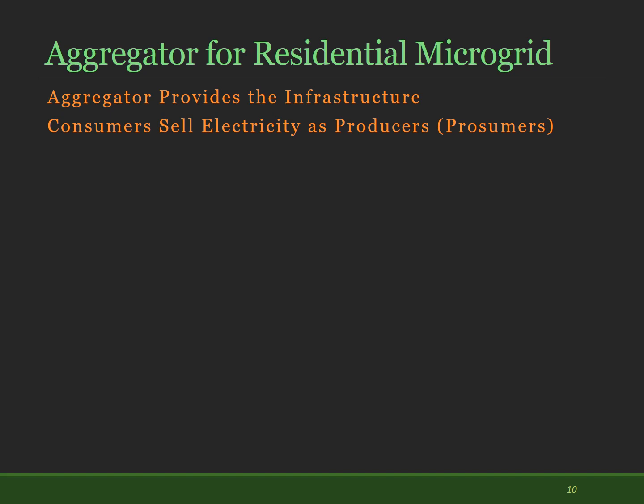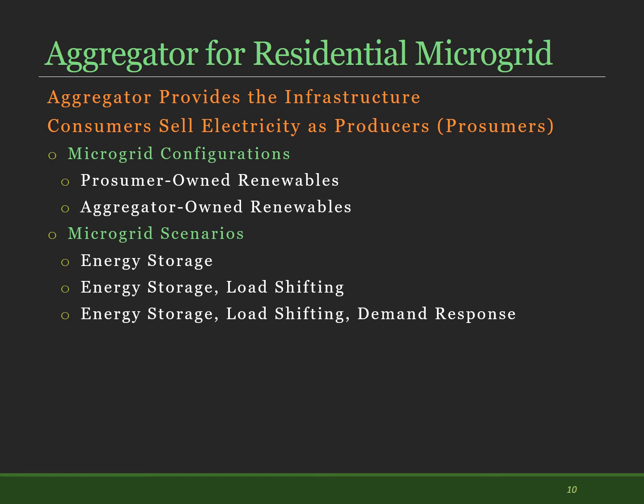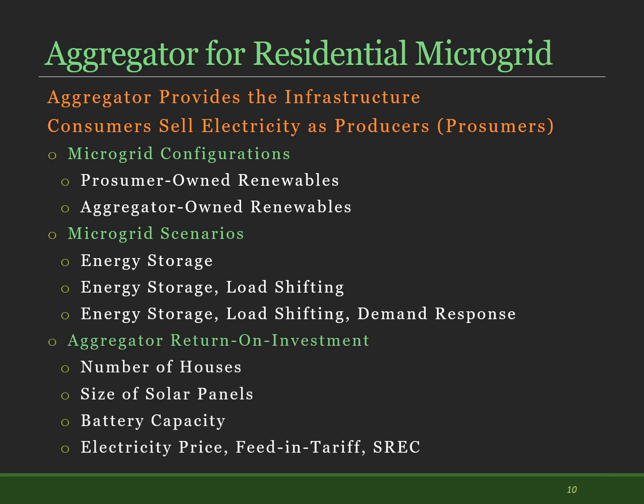In our proposed business model, the aggregator can provide and install the infrastructure required for homeowners. Homeowners not only consume power from the aggregator at a cheaper price, but also produce power using renewables and sell it to the aggregator at a higher price than they could sell to utilities. We have considered two configurations where renewables are owned either by homeowners as prosumers, or by the aggregators. We analyze the influence of different energy management methodologies and microgrid scenarios on the return on investment. We also analyze multiple parameters such as the number of houses participating in the plan, the average size of solar panels installed, the battery capacity, and the pricing policy defined by the aggregator. We modeled a residential microgrid using our Gridmat tool and simulated and analyzed the results for each case.